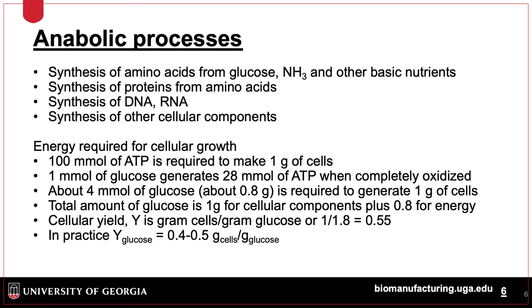Therefore, the cellular yield Y is grams of cells per gram of glucose, or 1 over 1.8, which equals 0.55. In practice, though, the amount is closer to 0.45.